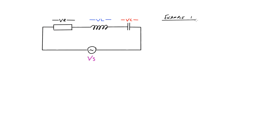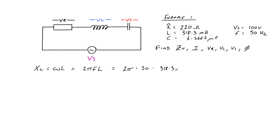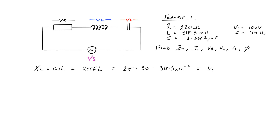We'll do an example. The resistor value is 220 ohms, the inductor value is 318.3 millihenries, and the capacitor is 6.3662 microfarads. Supply voltage is 100 volts peak at 50 hertz. We're going to work out the reactances, impedance, the current, all of the voltages across the components, and the phase angle. To find the impedance we need to know the reactance of the inductor and capacitor at 50 hertz. XL is 2π × 50 Hz × 318.3 millihenries, which equals 100 ohms inductive reactance.